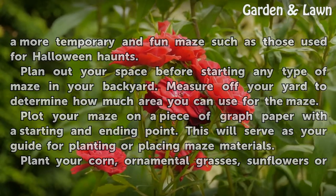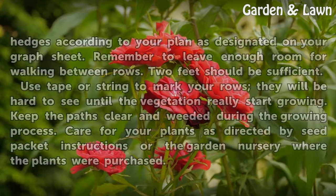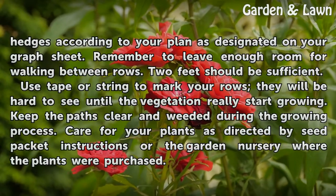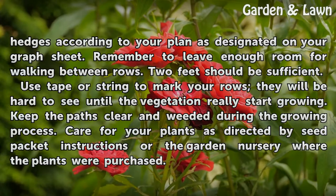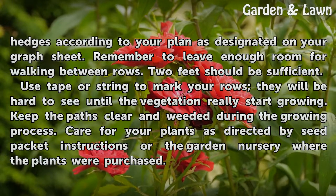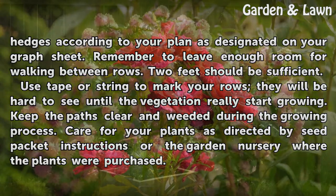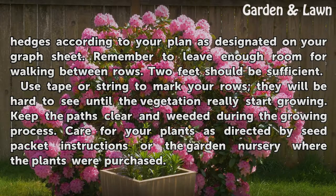Plant your corn, ornamental grasses, sunflowers or hedges according to your plan as designated on your graph sheet. Remember to leave enough room for walking between rows — two feet should be sufficient. Use tape or string to mark your rows, as they will be hard to see until the vegetation really starts growing.